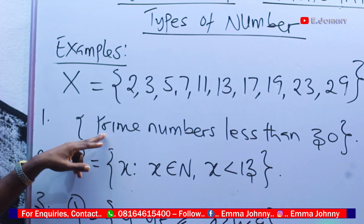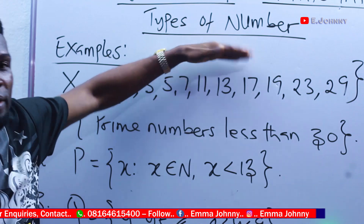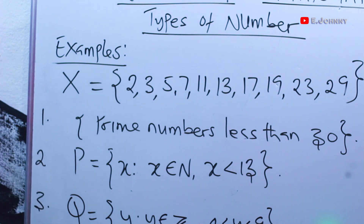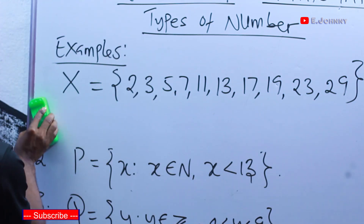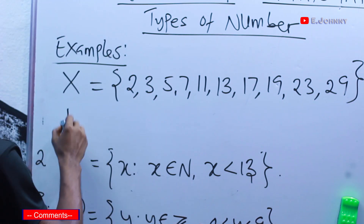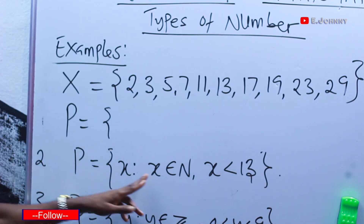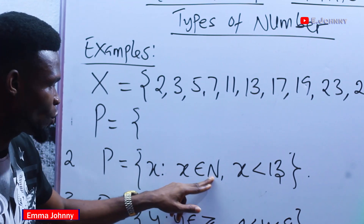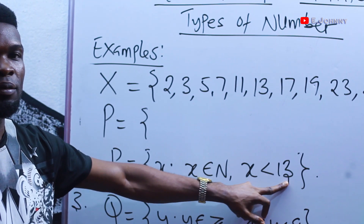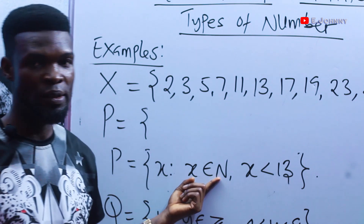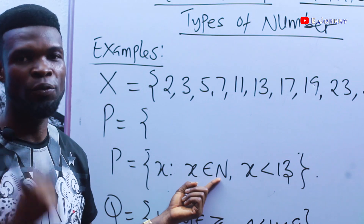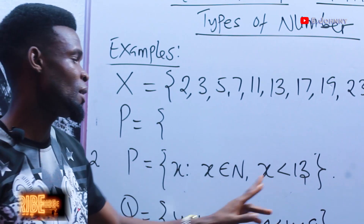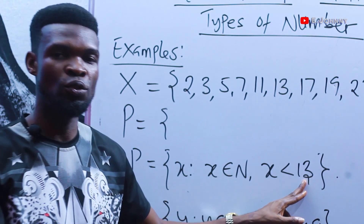You are now able to transform this set from set-builder form to listed form. The next one: P is a set of x such that x belongs to — this symbol means 'belongs to' or 'is a member of' — the natural numbers, and x is less than 13. Natural numbers are positive counting numbers starting from 1, so the elements start from 1 and end at 12 since x is less than 13.